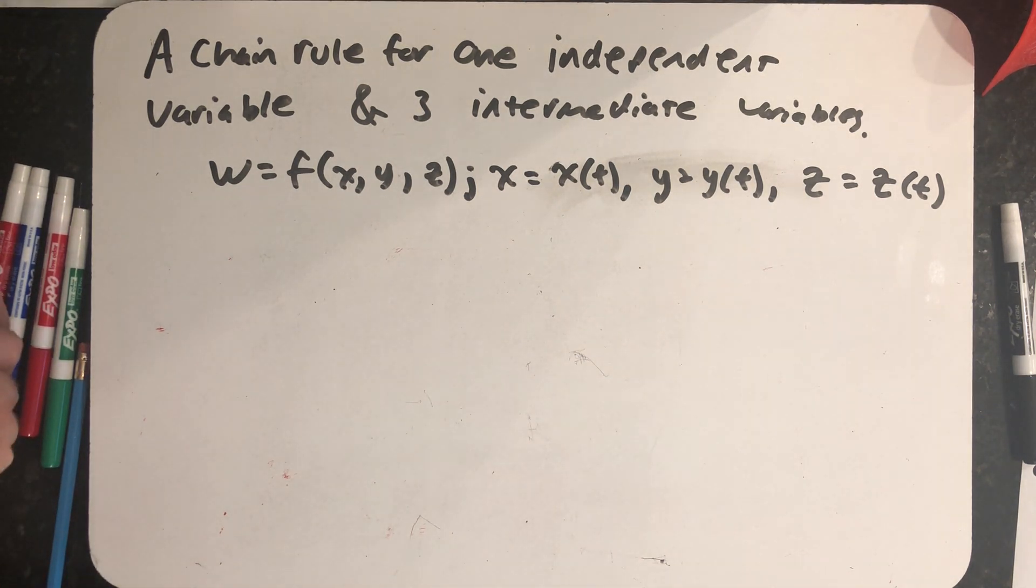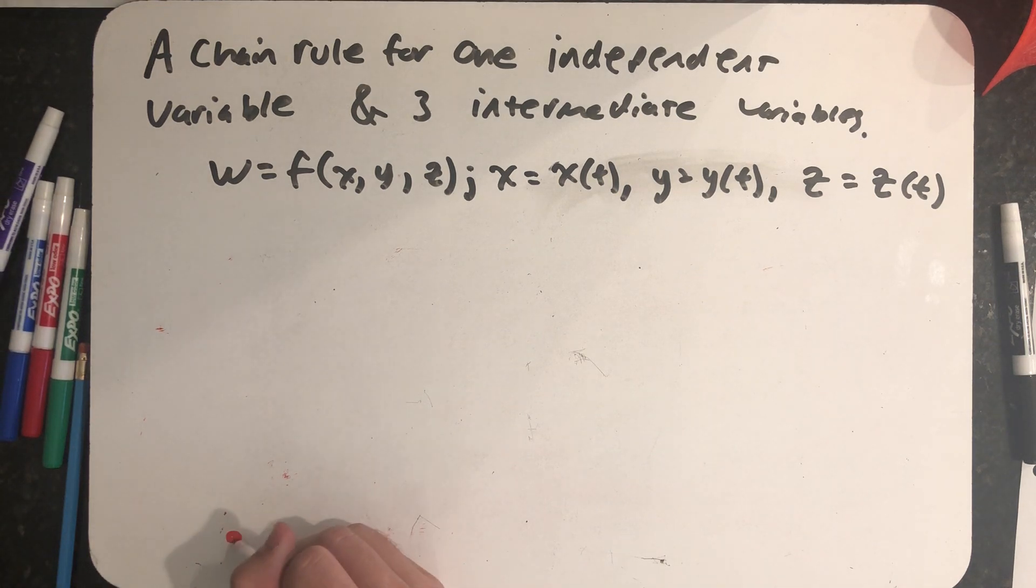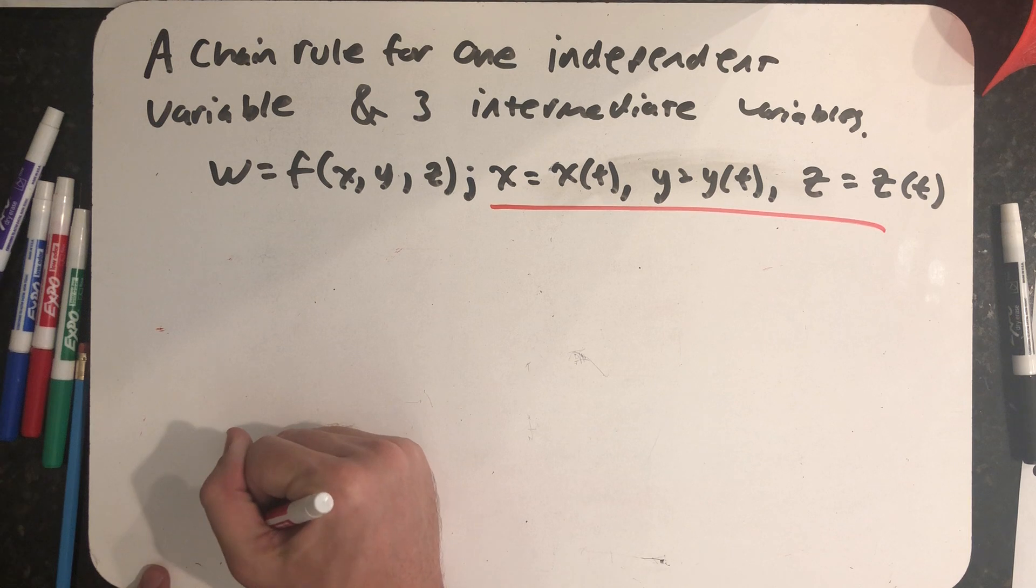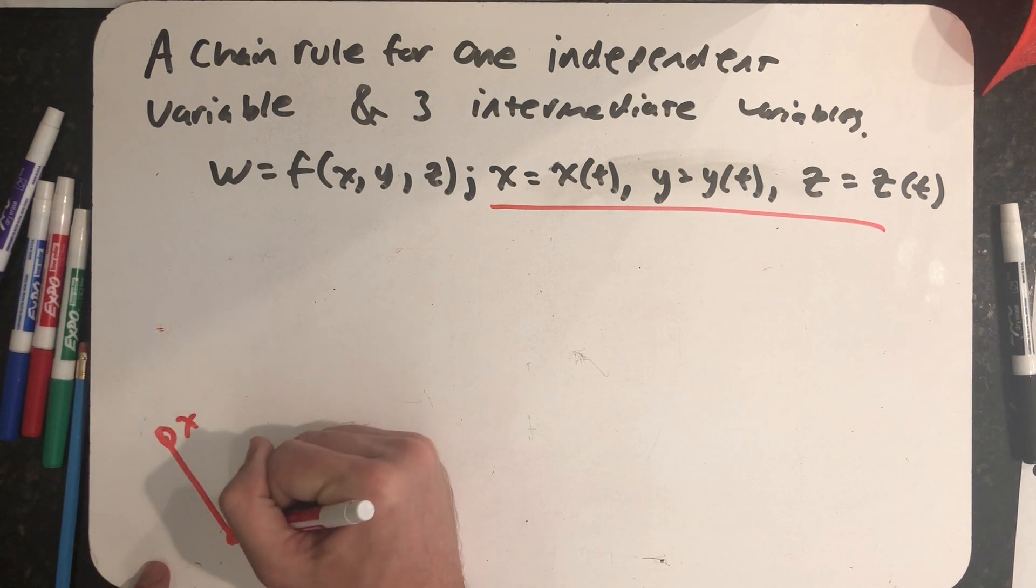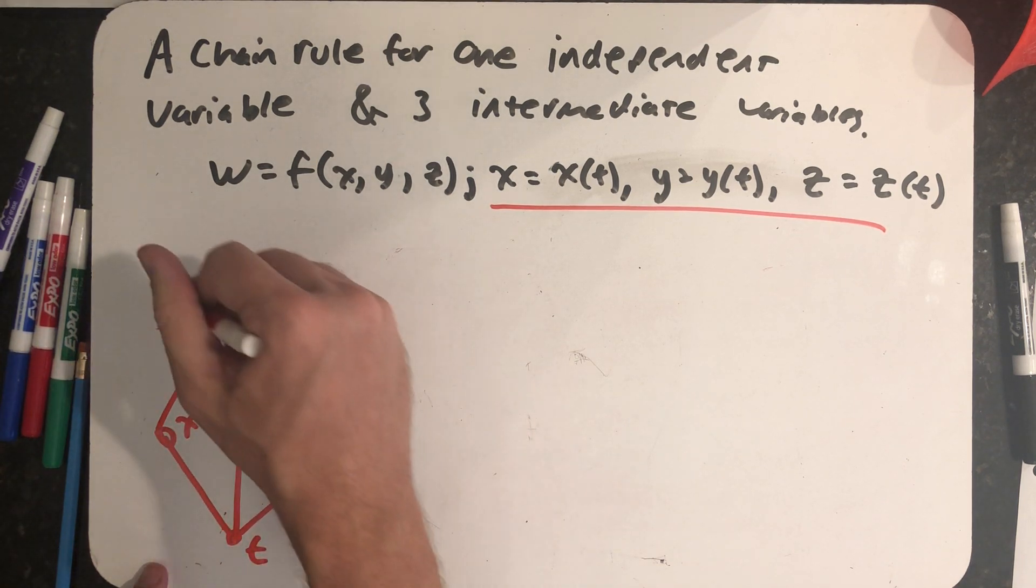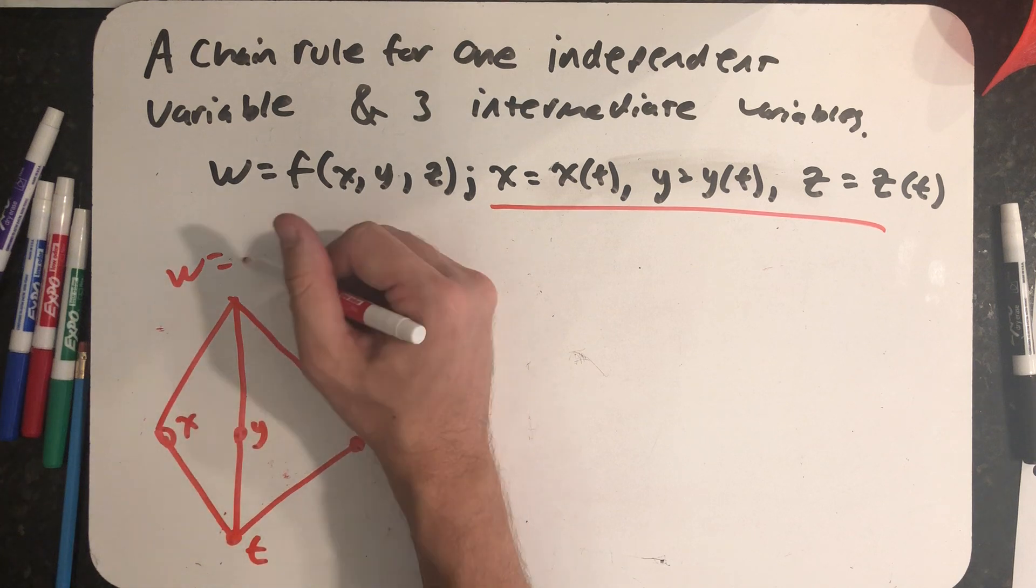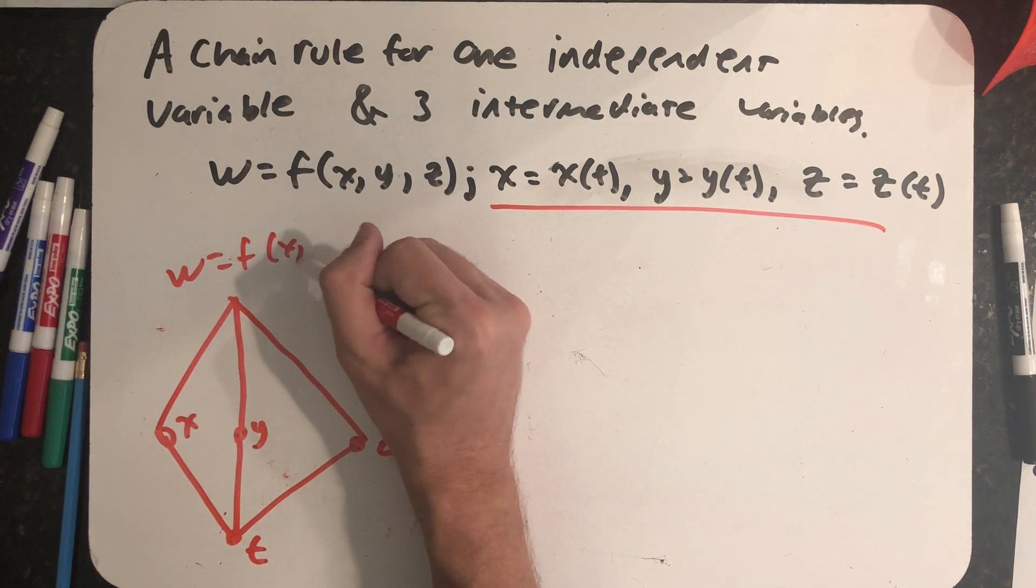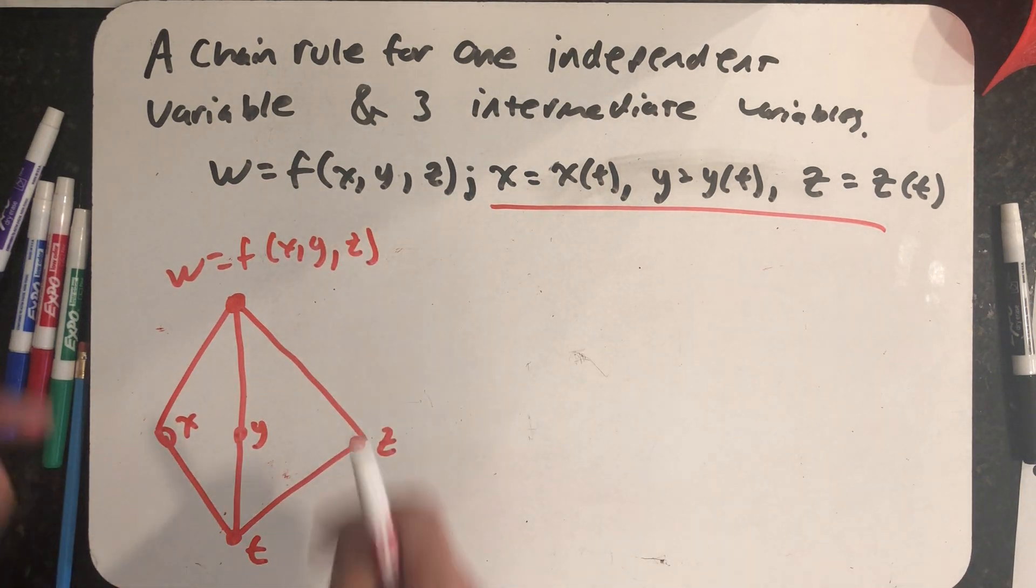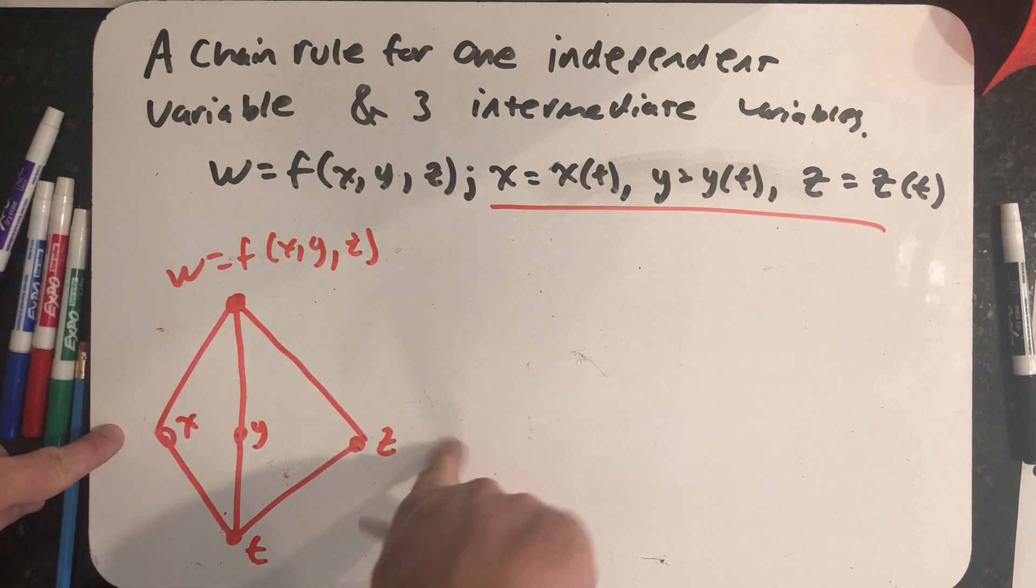Let's draw a dependency diagram. My lone independent variable will start at the bottom. I then use these three functions to find an x, a y, and a z. I use those variables to find a w, or an f, whatever I wanted to refer to that as.